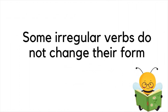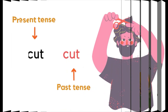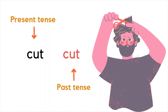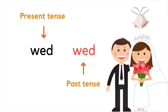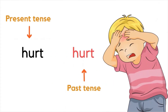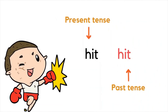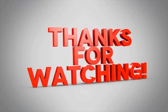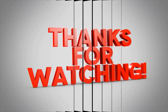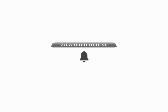Some irregular verbs do not change their form. For example: cut / cut, split / split, wet / wet, hurt / hurt, and hit / hit. You can replay this video as many times as you wish to learn these irregular verbs. In our next video we will look at modal verbs. Remember to subscribe for much more. We'll see you next time. Bye!